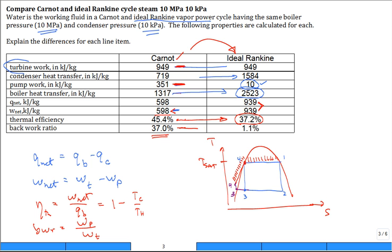But here's the big one. Look at that difference in the back work ratio: 37% all the way down to 1.1%. Huge difference.